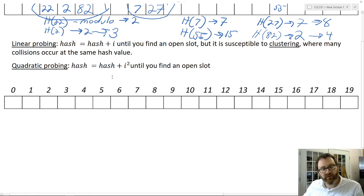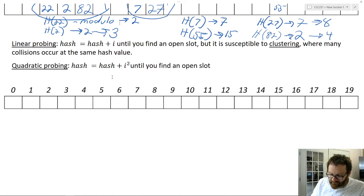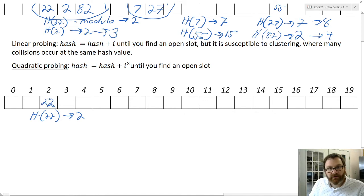A slightly better approach is what we call quadratic probing. It's kind of the same premise, except we're going to do bigger and bigger hops every time to spread the data out through the hash table. So let's put these same values back in. Let's hash 22. And again, we'll use the modulo method. So once again, 22 is going to resolve to 2 right off the bat.